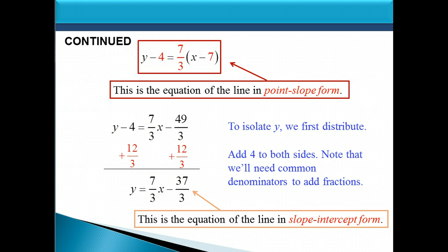And we're done. When you have these kinds of scenarios, you might want to graph both lines to verify they are perpendicular and that the line you found passes through the point 7, 4 — then you know you've got the right answer. Have fun with these. See you later, bye-bye.